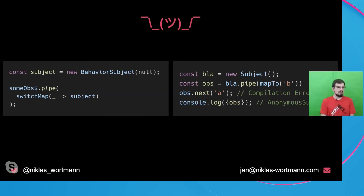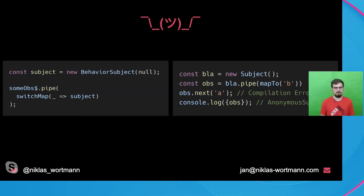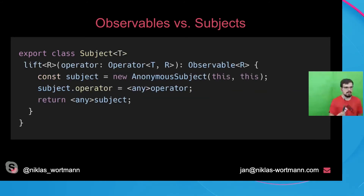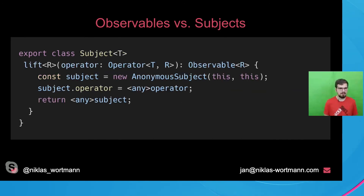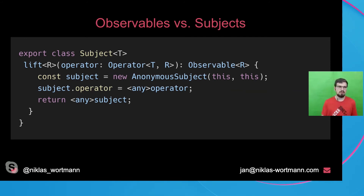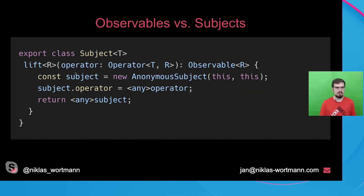Back to our initial statement: why does calling an operator on a subject cause a problem? The subject instance actually implements lift as well, and this is the root cause of why at runtime we see an anonymous subject being returned even though the typing specifies it returns an observable. This is a typing flaw, but there are still valid reasons for this behavior. As of now, lift is marked as protected, so you're not supposed to call it on your own.